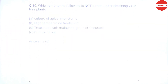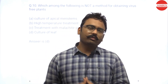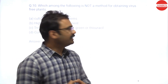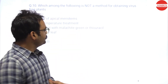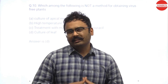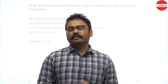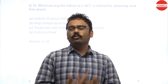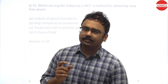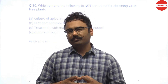The tenth question asks which is NOT a method for obtaining virus-free plants. To remove virus, you can: treat with high temperature; treat with malachite green or thiouracil; or take meristematic cells — which divide at a very fast pace so the virus cannot infect them. Meristematic cells are found at the tip of the root and at the apical tissue of the shoot.